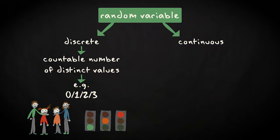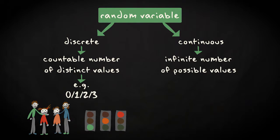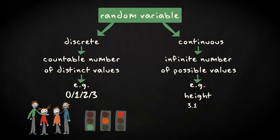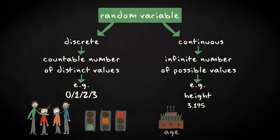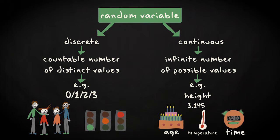A continuous random variable is one which takes an infinite number of possible values. Continuous random variables are usually measurements. To illustrate the aspect of infinity, let's assume a height that has been measured as 3.1 meters. But with a more accurate measuring tape, a value of 3.14 is measured, and with an even more accurate tape, 3.145 meters. In other words, by making more accurate measurements or zooming in, an infinite number of outcomes is possible. Other examples of continuous variables are age, temperature, or the time it would take you to run a mile.